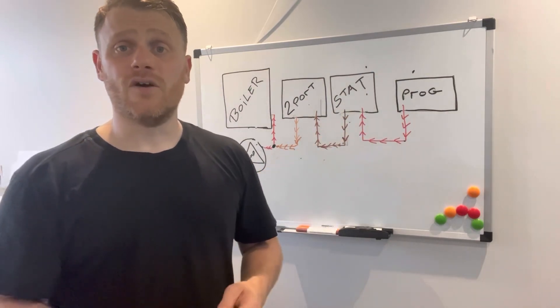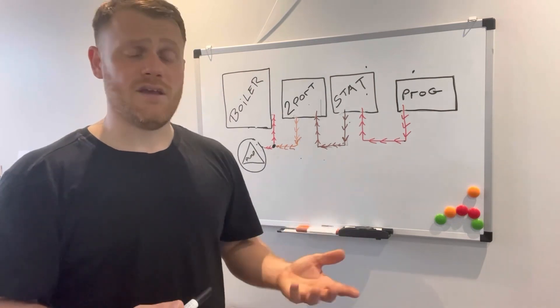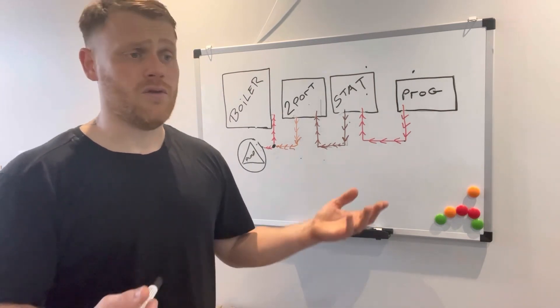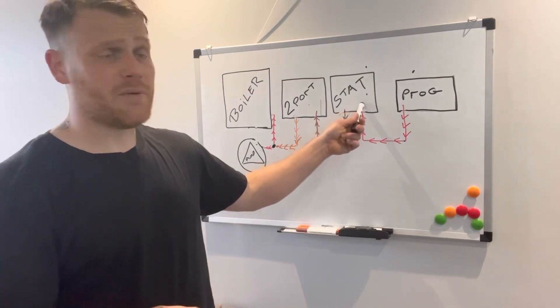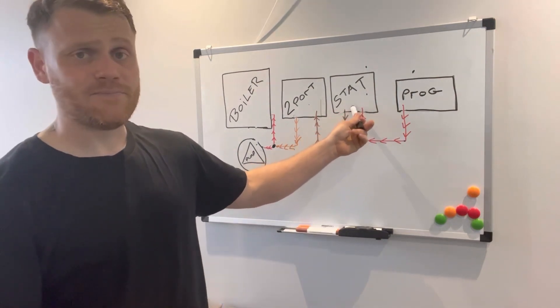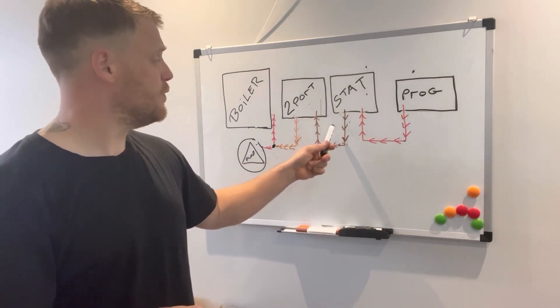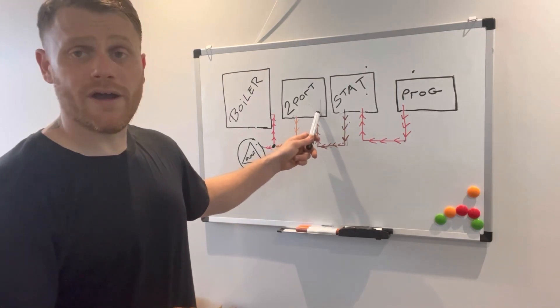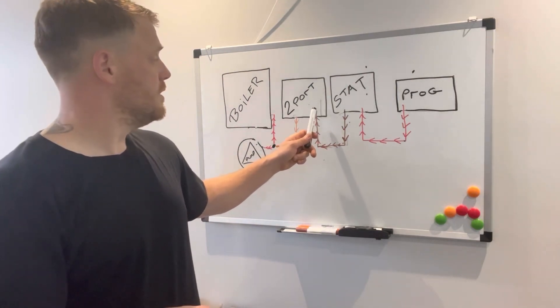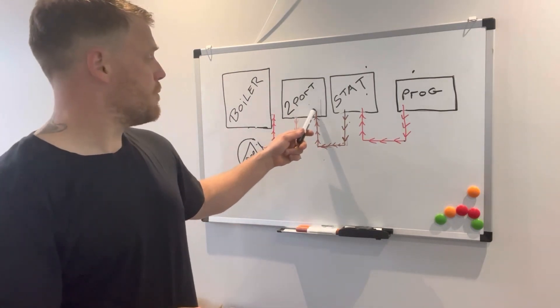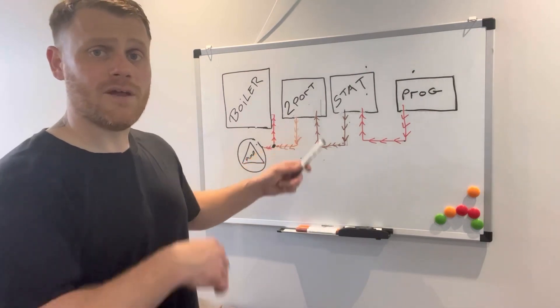That can be your room stat or your hot water cylinder stat. Now if that's got a demand, so if the hot water needs heating or the central heating needs to come on, that'll be calling. That'll make the switch in here and that'll send 240 volts then to your brown wire on your two-port.